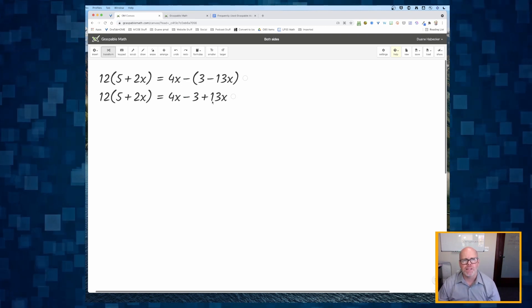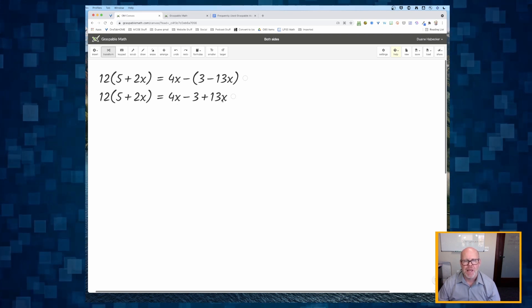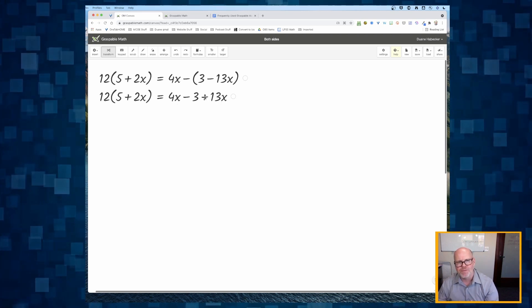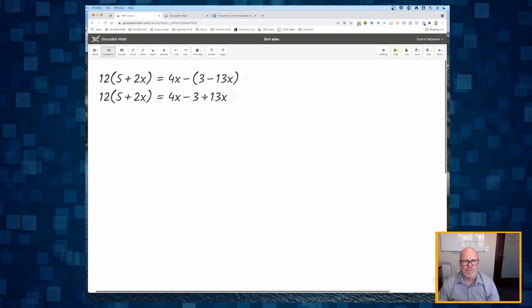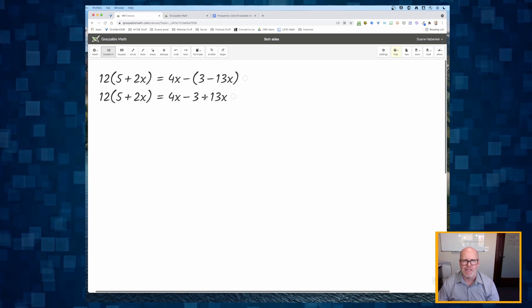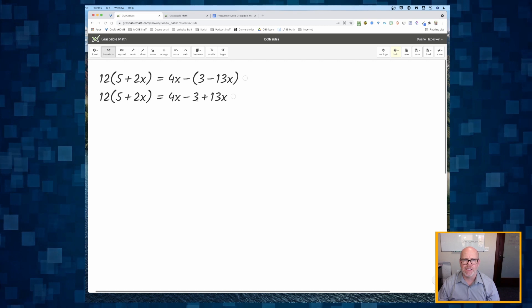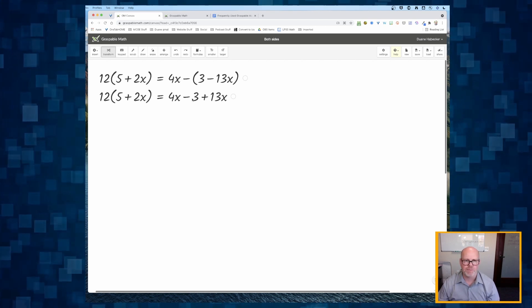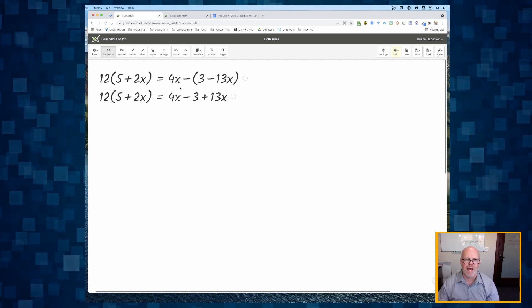And now I want to simplify this 4x plus 13x. So the way I do that, in fact, if I try and just double click on this plus sign, see that it's trying, it says no, you are not allowed to simplify the 3 and the 13x. Would you stop doing that?